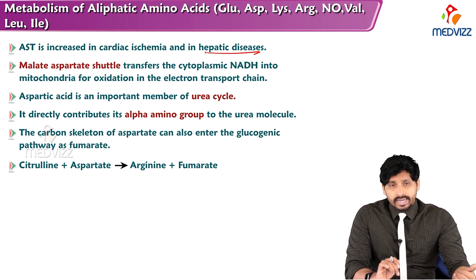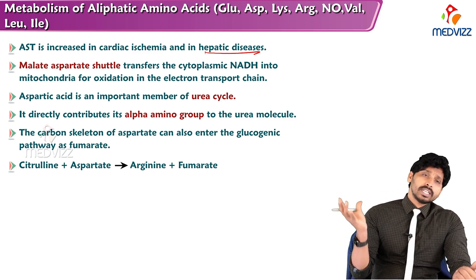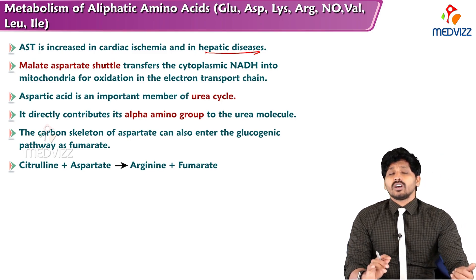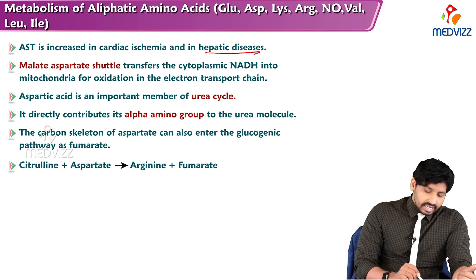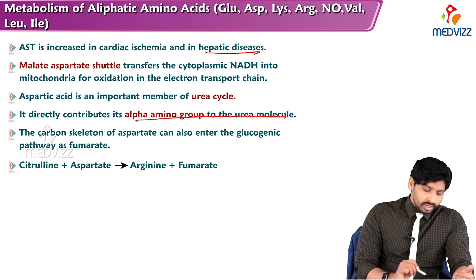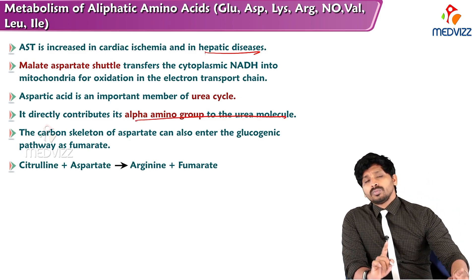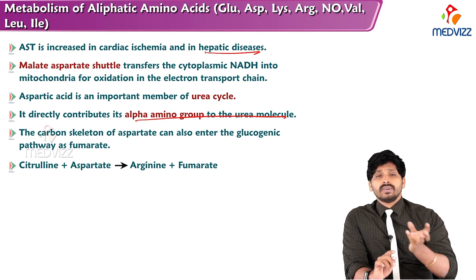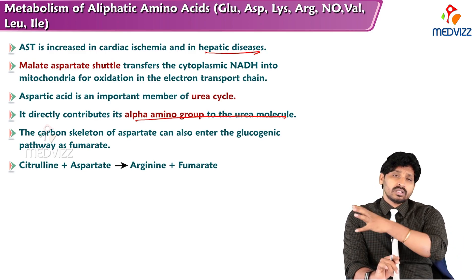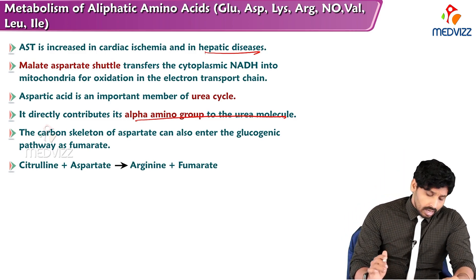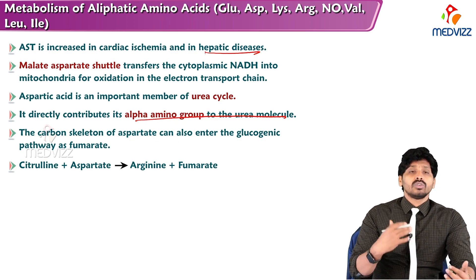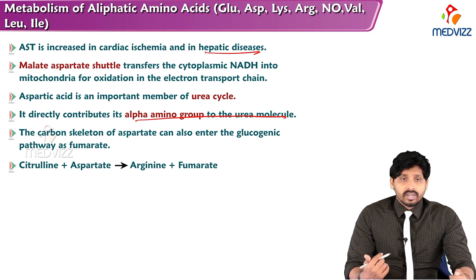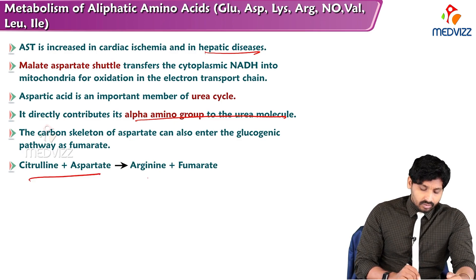Aspartic acid is an important member of the urea cycle: the whole molecule of aspartic acid is incorporated, combining with citrulline to form argininosuccinate, directly contributing an alpha-amino group to the urea molecule. One amino group comes from ammonia itself, and the other is donated by aspartic acid. The carbon skeleton of aspartic acid can also enter the glucogenic pathway as fumarate.